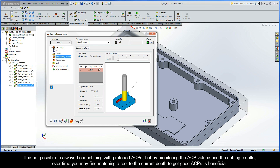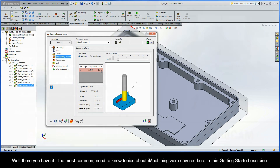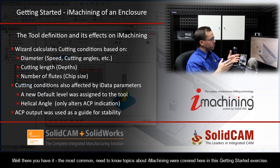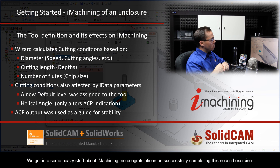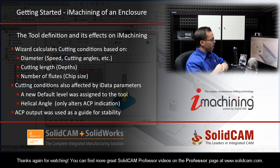It's not always possible to be machining with preferred ACPs, but by monitoring the ACP values and the cutting results, over time you may find that matching a tool to the current depth to get good ACPs is beneficial. The most common need-to-know topics about iMachining were covered in this Getting Started exercise: adding a new machine and material to the iMachining database, an in-depth look at the wizard using the iREST technology type, and the tool definition in conjunction with ACPs. Congratulations on successfully completing your second exercise, and thanks for watching. You can find more great SolidCAM Professor videos on the Professor page at www.SolidCAM.com.